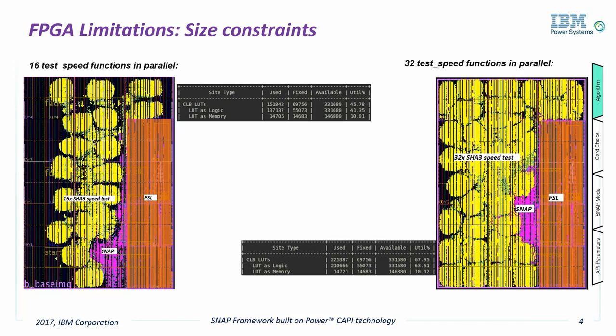This slide shows two FPGA images — on the left with 16 CatJack instances and on the right with 32 instances. Both images have the Power Service Layer (PSL) in the large rectangle on the bottom right. The pink area is the CapiSnap infrastructure logic. All of the rest of the area on the FPGA is free space for your algorithm. In this case, each of the yellow blobs is a single CatJack engine. The more CatJack engines we can fit into the FPGA, the higher the performance. But clearly there is a limit, as 32 engines pretty much fill the FPGA.